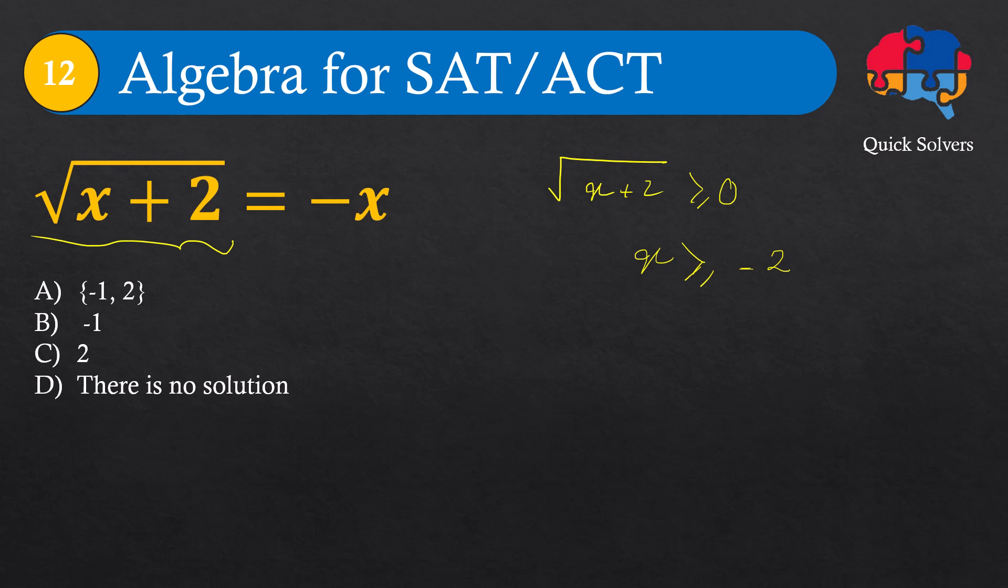Since the left side should be positive, that means minus x should also be positive. From this, we can conclude that x should be less than or equal to 0. Combining both constraints, x falls in the range of minus 2 to 0.